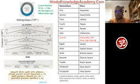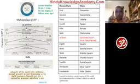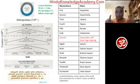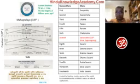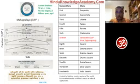One Kalpa, or one day of Chaturmukha Brahma — within that one day, that's 12 hours — 14 Manvantaras have happened. Each Manvantara has had 71 Divya Yugas, and each Divya Yuga is approximately 4.32 million years.